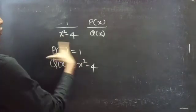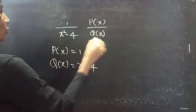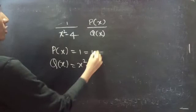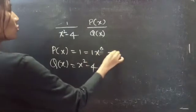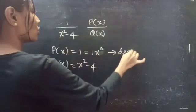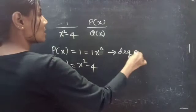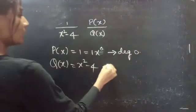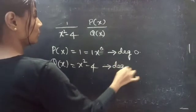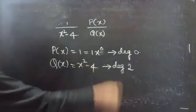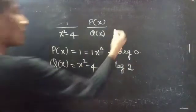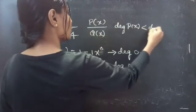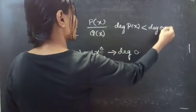The degree of P of x is 0 — you can write 1 as 1 into x to the power 0, so the degree of a constant polynomial is 0 — and Q of x is of degree 2. Therefore, the degree of P of x is less than the degree of Q of x.